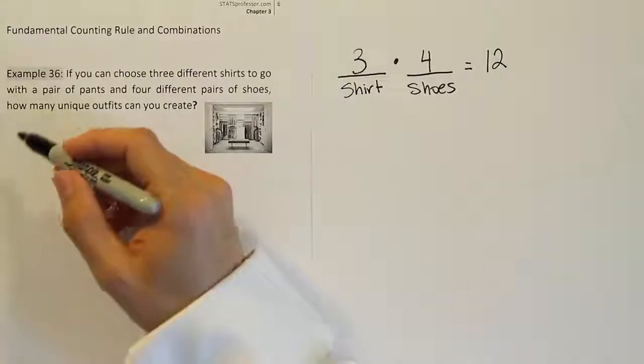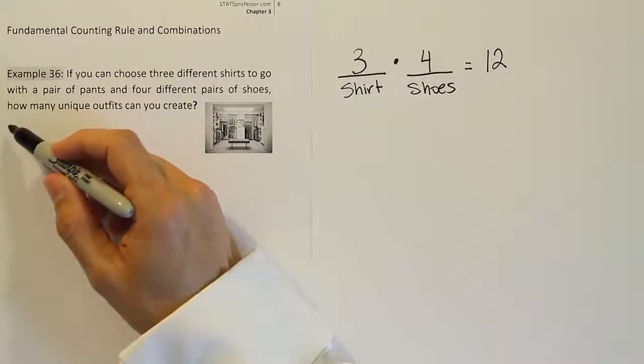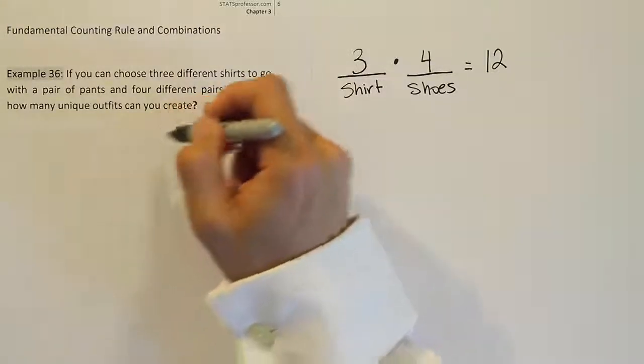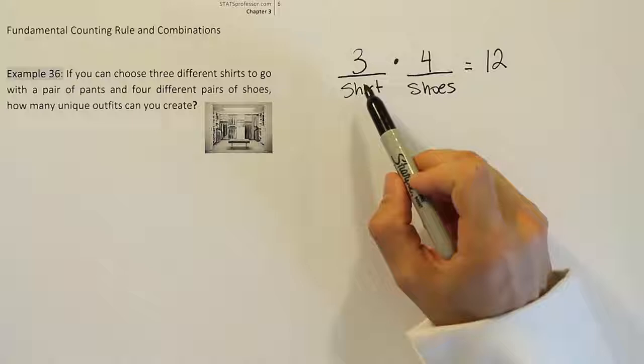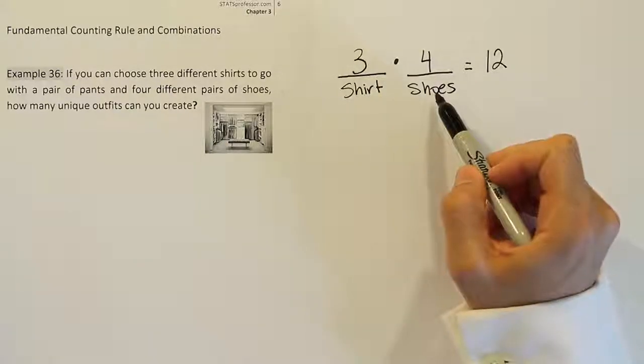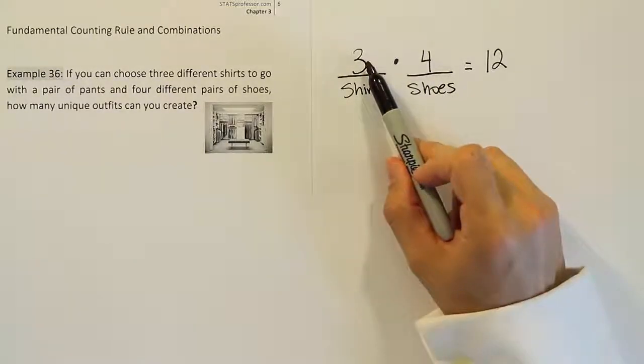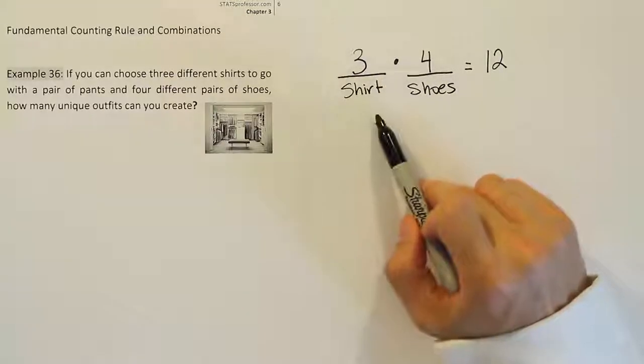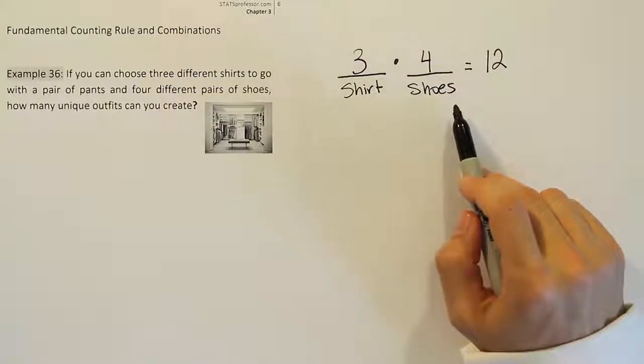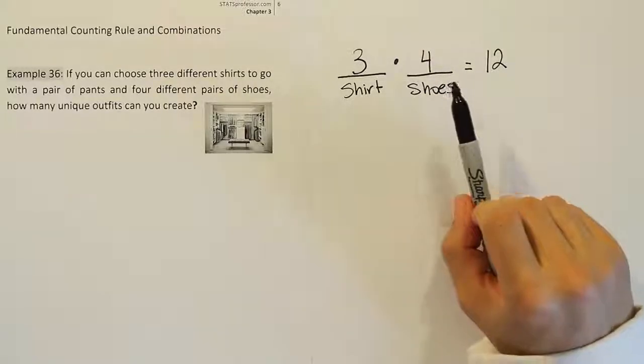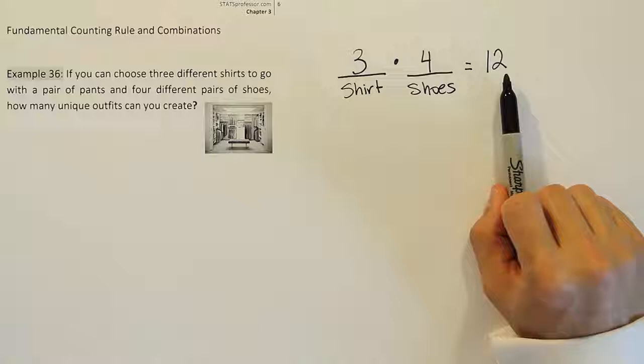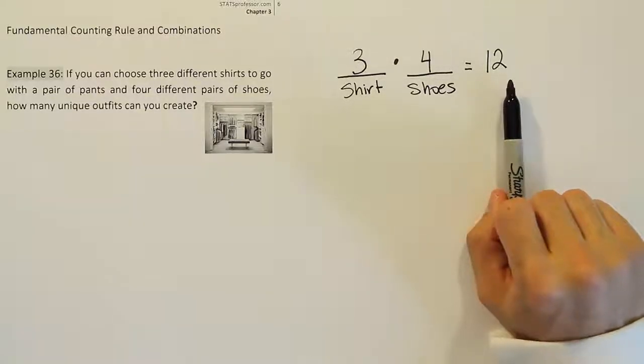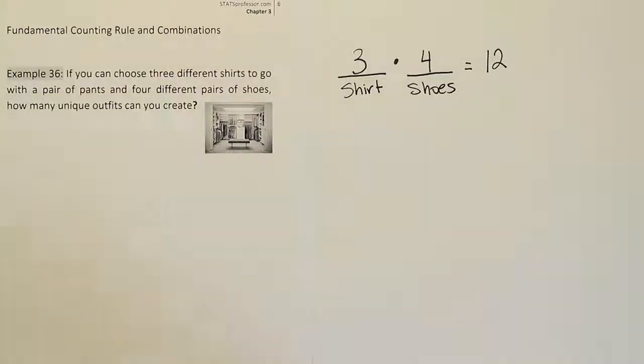So again, I knew it was a fundamental counting rule problem mainly because it said the phrase how many. So it's asking how many ways can I accomplish a task, and my task has multiple steps. All I do is multiply the number of ways to complete the first step times the number of ways to complete the second step. The first step is to pick a shirt. The second step is to pick the shoes. I have three options for the shirt, four options for the shoes. It gives me 12 different unique pairings, and that will give me 12 unique outfits that I can create from this setup.